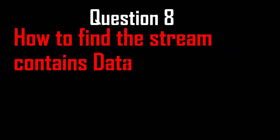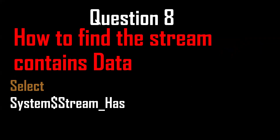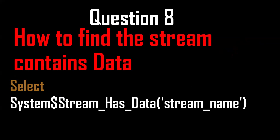Next, how to find if a stream contains data. Streams are nothing but CDC — Change Data Capture. By using SELECT SYSTEM$STREAM_HAS_DATA('stream_name') we can figure it out. If data is there we get a TRUE value, otherwise FALSE — it returns a boolean data type.